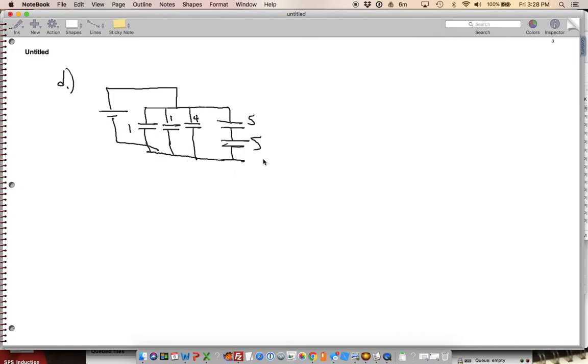So we kind of want to do the same thing that we did before, where we want to combine these. To find the equivalent, we want to go to something that looks like this. All right, so we want to find the equivalent of the 5 and the 5. That's pretty easy.